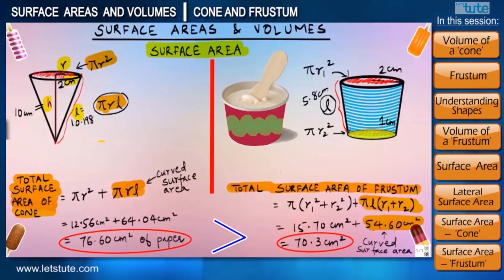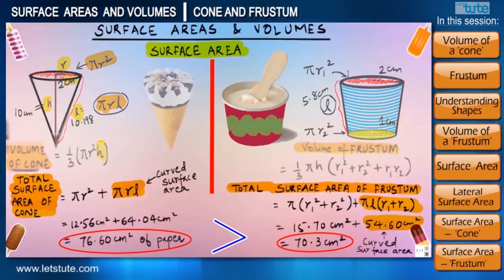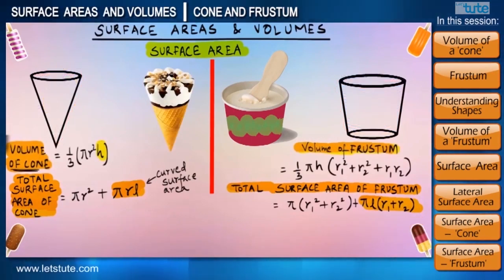But friends, let us leave these kind of decisions on these companies. It's up to them to decide what's best for their business. What we should feel happy about is the fact that as a mathematician, we not only help them out, but we also along the way learned some important tools to find surface area and volume for a cone and a frustum.